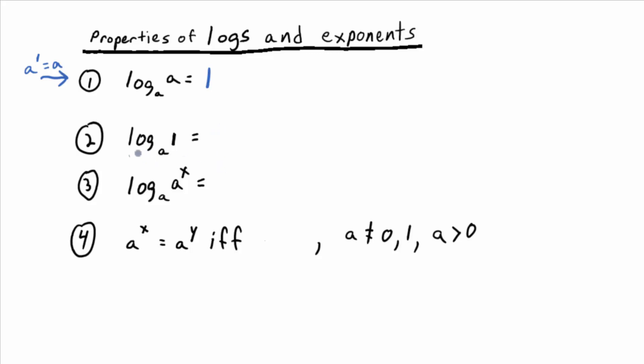Okay, log base A of one, so the input of one. Well, if you think back to those graphs, what did you get? When the input was one, you got zero. Now, is that obvious in exponential form? What's it saying in exponential form? A to the zero equals one. You knew that. That better still be true when you write that in log form.